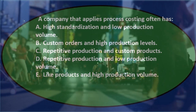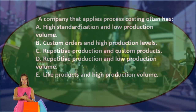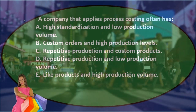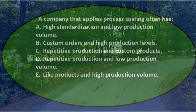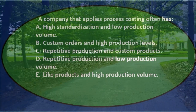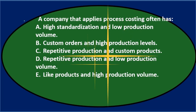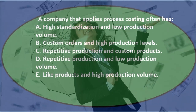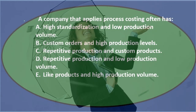When thinking about process costing, compare it to job costing. In a job costing system, inventory is more unique and distinct, so costs are tracked per job. In process costing, all inventory is the same. If items are unique, they take more time and cost more to make; if they're all the same, they're cheaper and you can produce more. All the characteristics of inventory flow from that distinction.